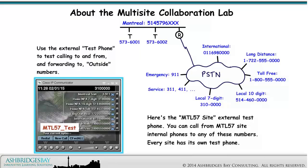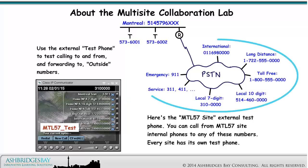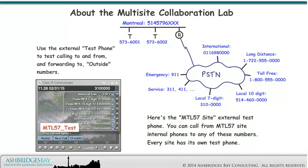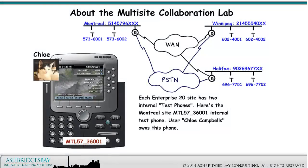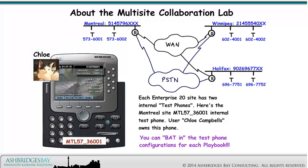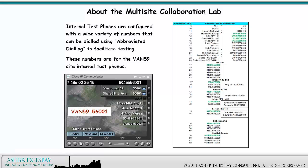Use the external test phone to test calling to and from, and forwarding to outside numbers. Here's the Montreal 57 site external test phone. You can call from Montreal 57 site internal phones to any of these numbers. Every site has its own test phone. Each Enterprise 20 site has two internal test phones. Here's the Montreal site Montreal 57 36001 internal test phone. User Chloe Campbell owns this phone. You can BAT in the test phone configurations for each playbook.